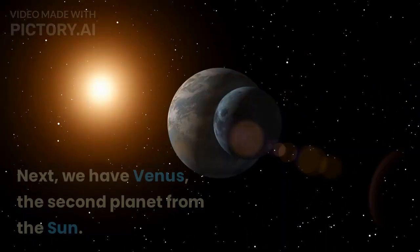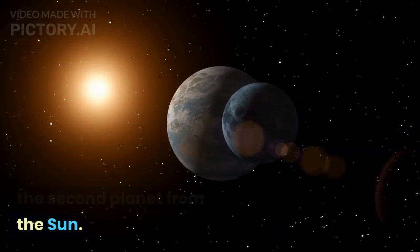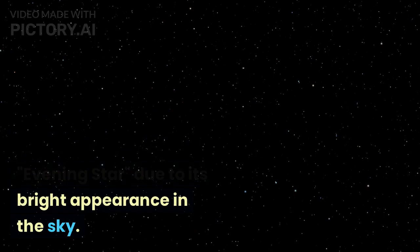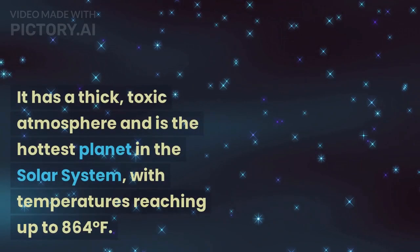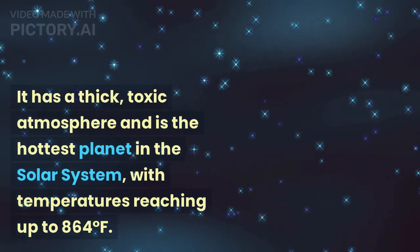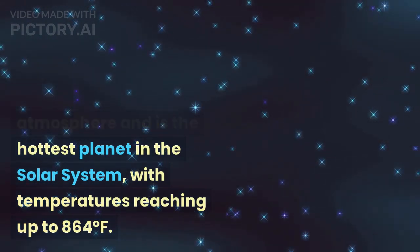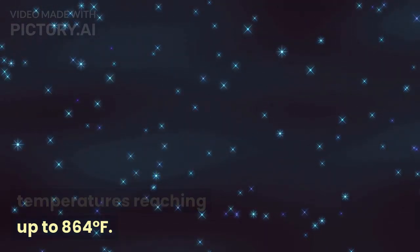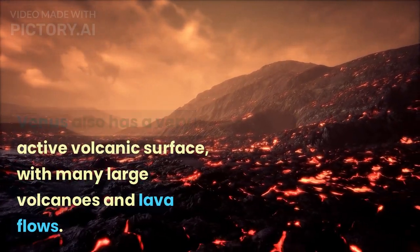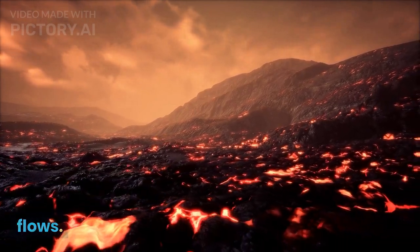Venus. Next, we have Venus, the second planet from the sun. Venus is known as the morning star or the evening star due to its bright appearance in the sky. It has a thick toxic atmosphere and is the hottest planet in the solar system, with temperatures reaching up to 864 degrees Fahrenheit. Venus also has a very active volcanic surface, with many large volcanoes and lava flows.